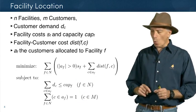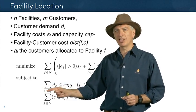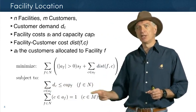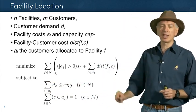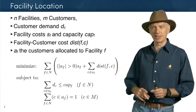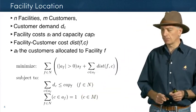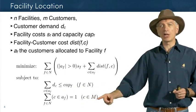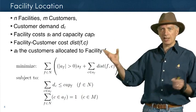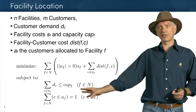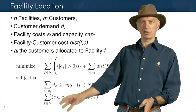There are two constraints. The first ensures no capacity constraint is violated: for every facility, the sum of demands of all assigned customers must be less than or equal to the facility's capacity. The second constraint ensures every customer is served: for every customer, at least one facility must have that customer assigned to it. Don't implement this model directly — it's impractical — but it is a precise mathematical expression of the problem.